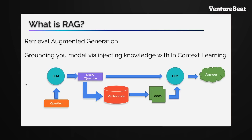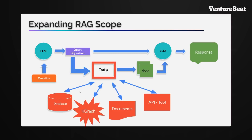While this is a simple version of it, it doesn't always have to have a database like this. It could have a normal conventional database, a knowledge graph, just documents, or tools and APIs — you go off and do a search on some APIs or on Google, for example, and bring data back from there. The key idea is that you go and get this data, bring it back in the form of documents, combine it with the original question, and derive the final answer from the LLM. This is fundamentally how these systems work.